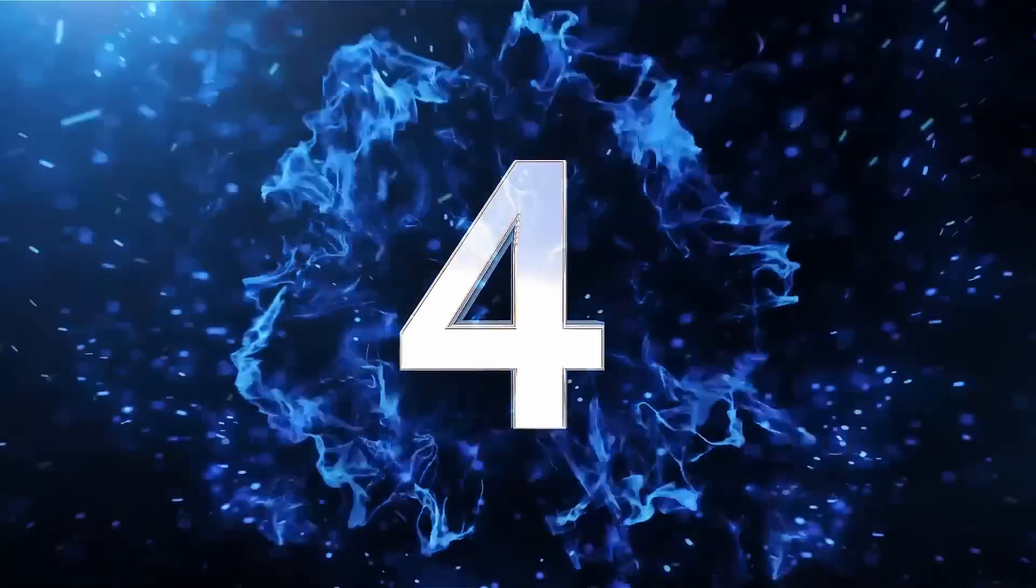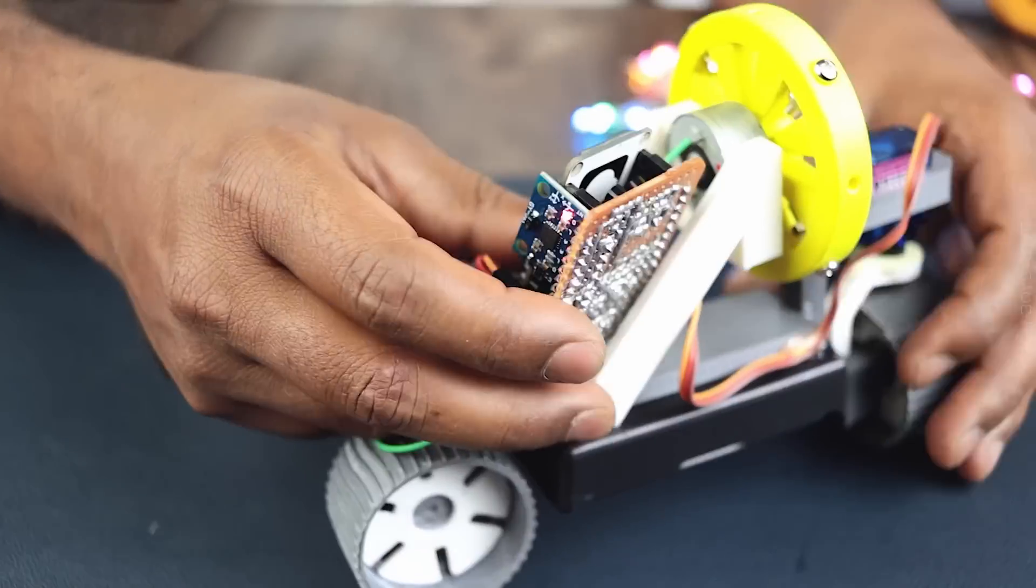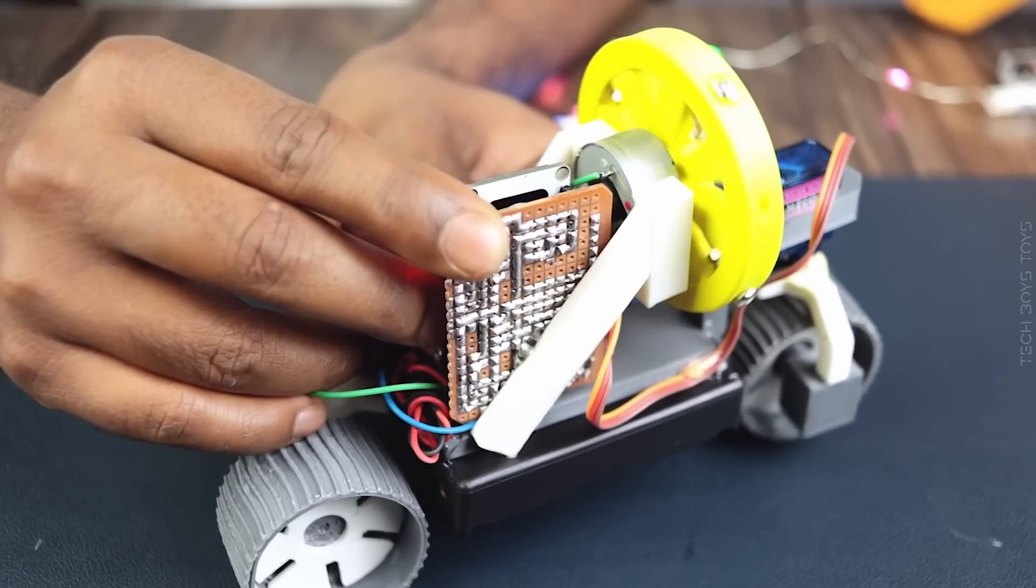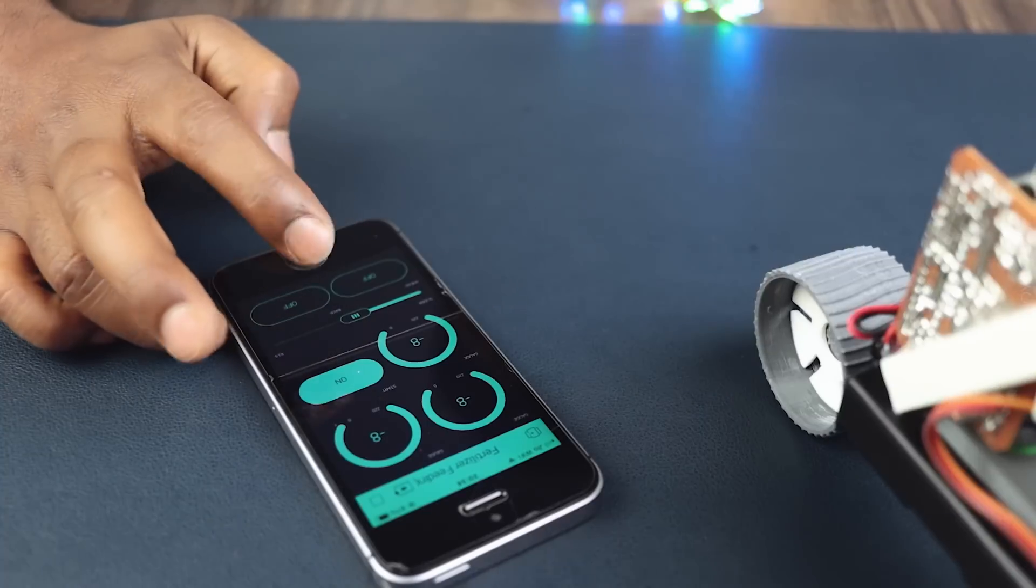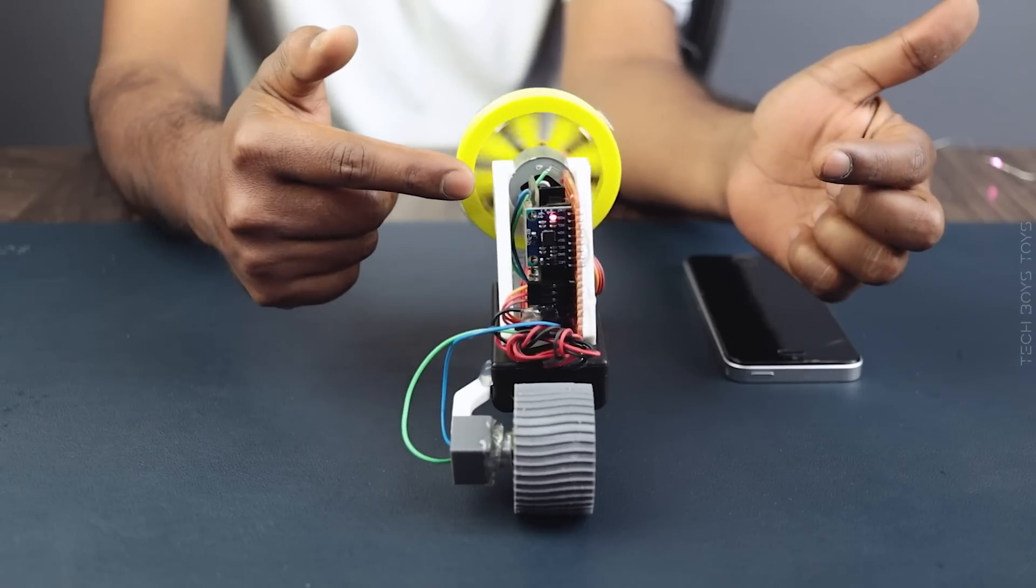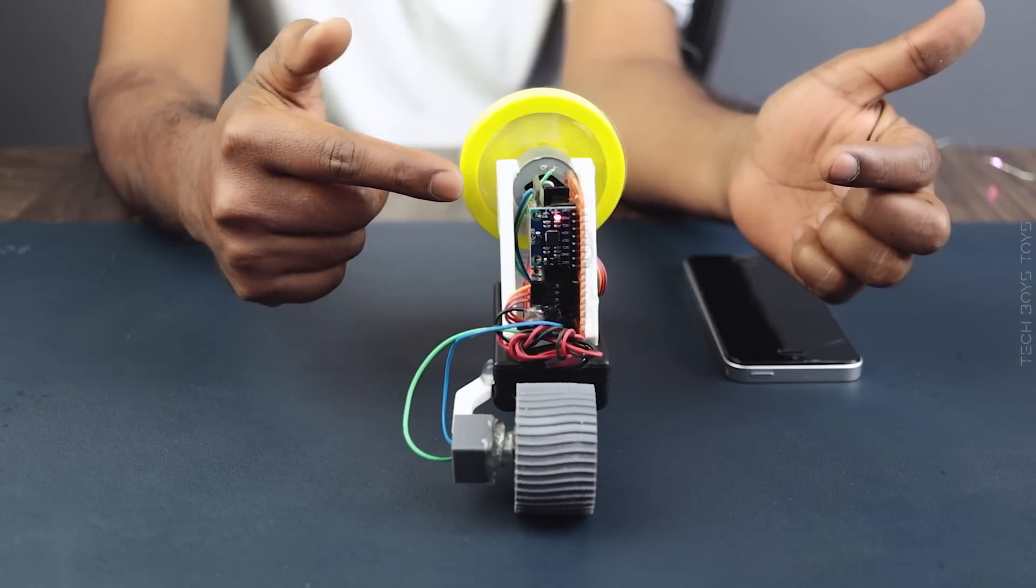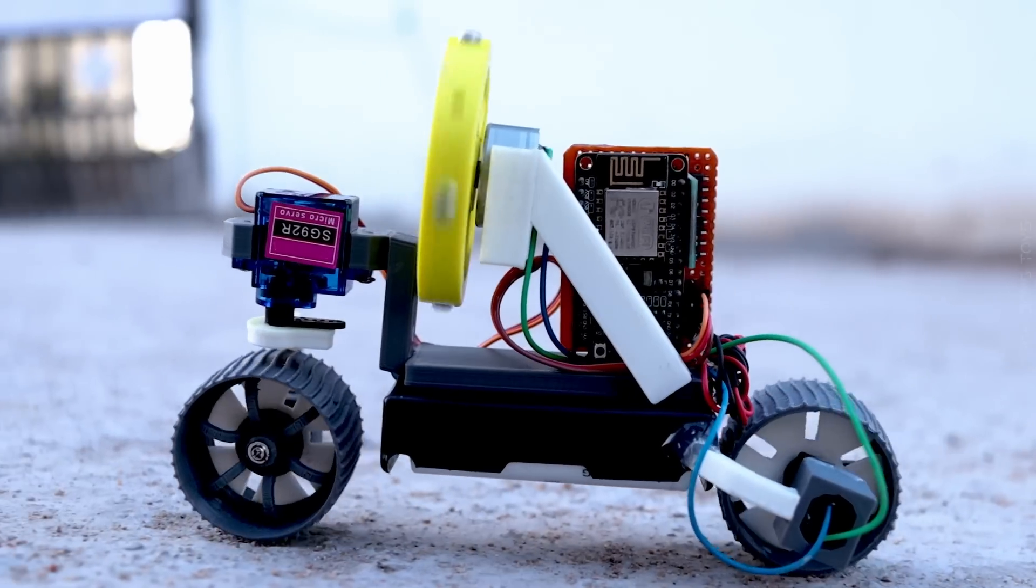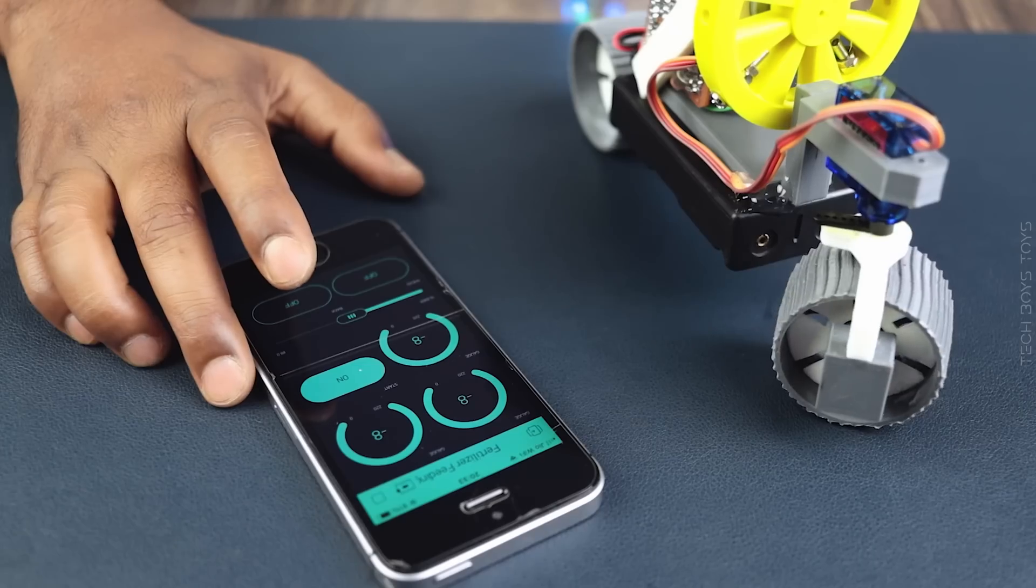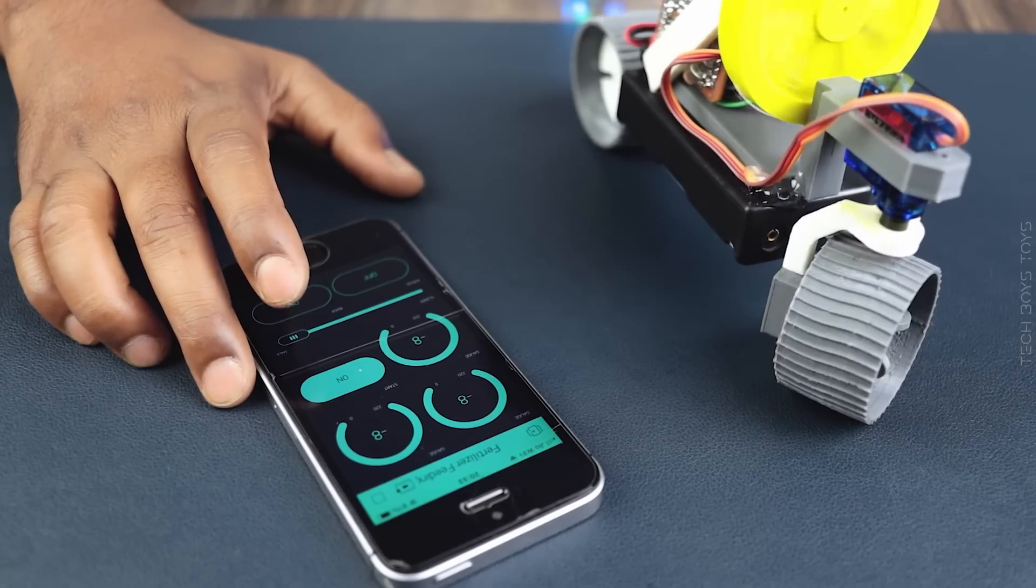Number 4. This is Self-Balancing Bicycle, which is also an IOT project and controlled by the smartphone. If you try to push it one side, the wheel will rotate counter-direction to make it balance. It also moves forward, backward, left and right, following smartphone instructions.